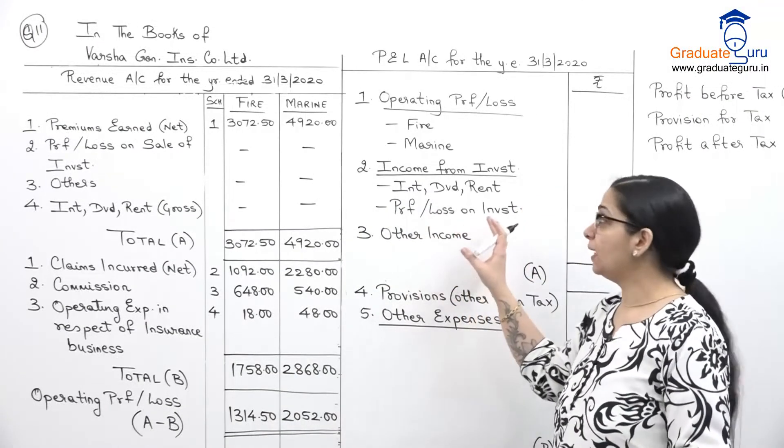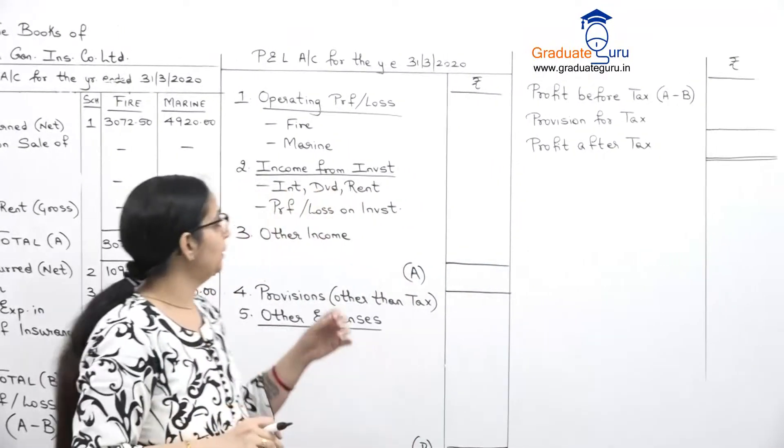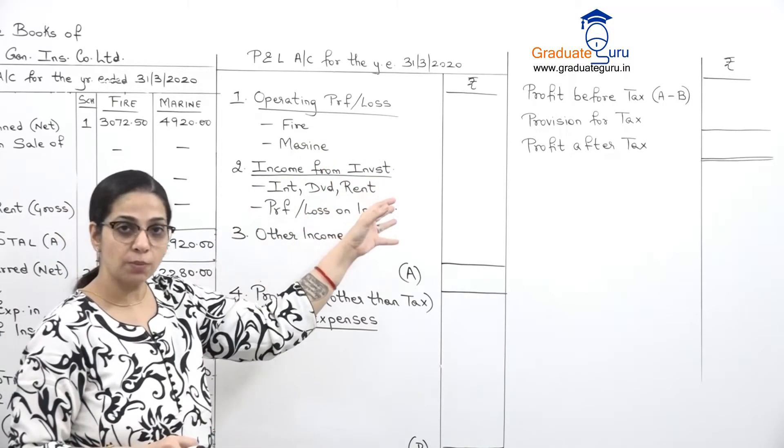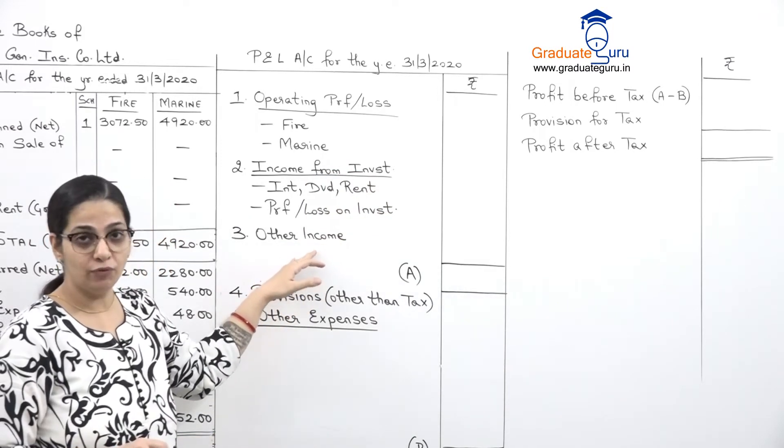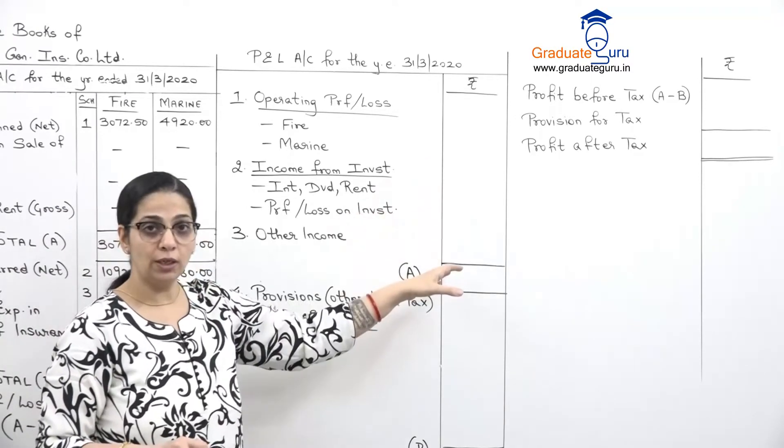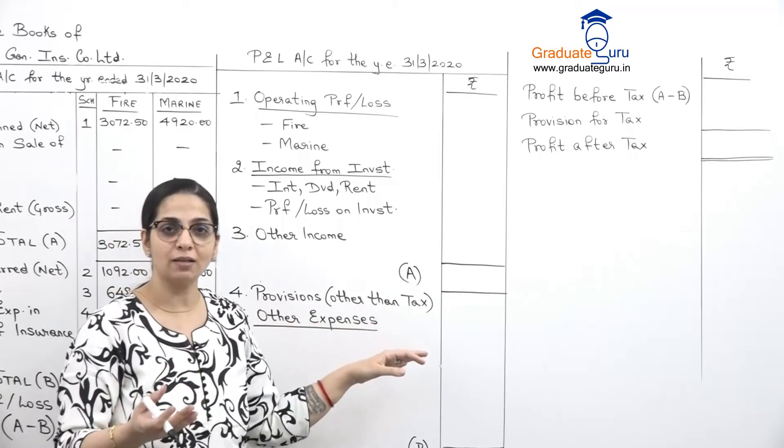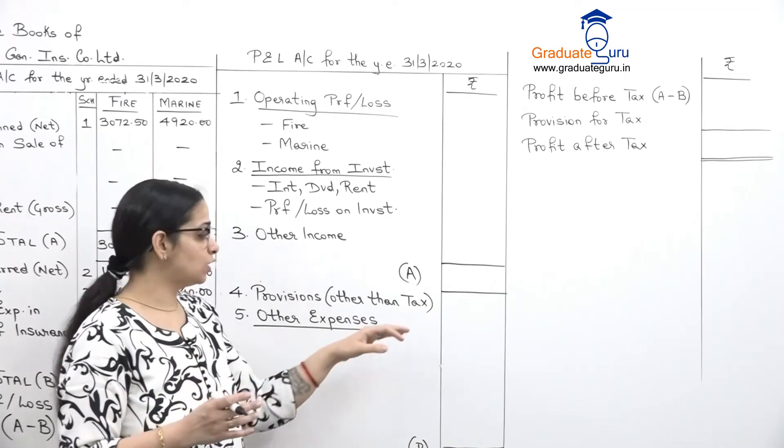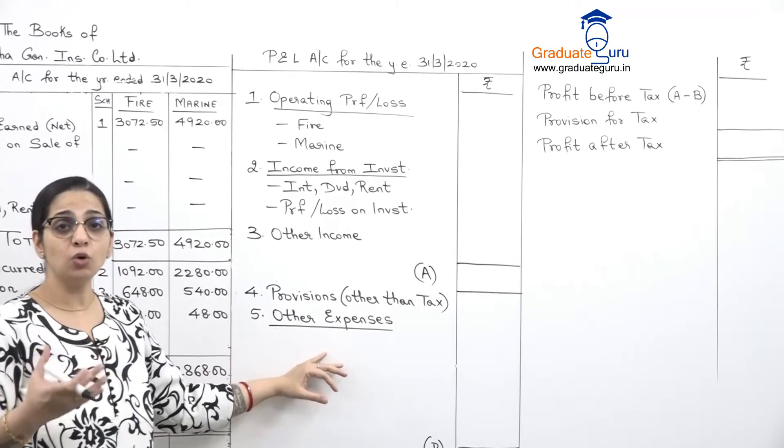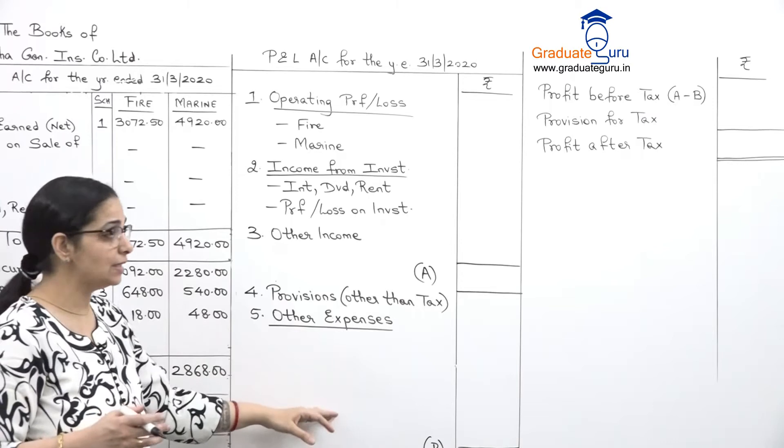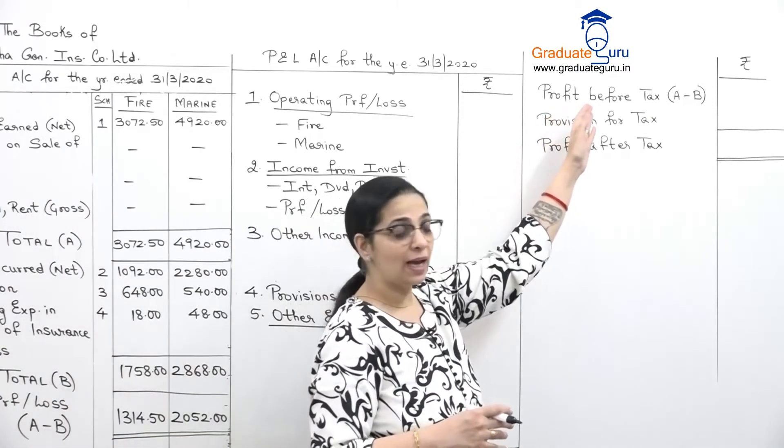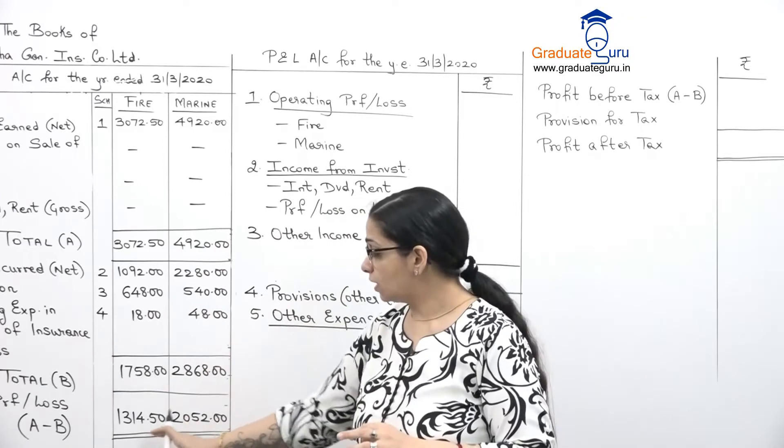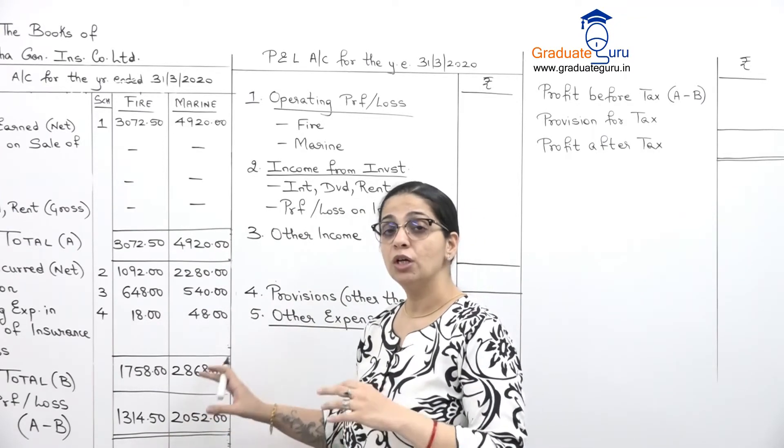So now I have made a P&L account format. First we will start with the operating profit which we get from revenue account, then we add the income from investment, then we add any other income if we have that. Then from that income total we have to subtract two things: one is provisions other than tax, like for depreciation or bad debts, then other expenses. Then we get our profit before tax, we subtract our tax and we get our profit after tax.